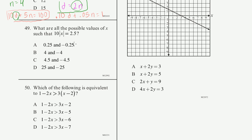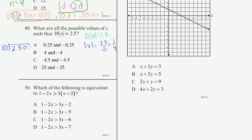Problem 49: What are all the possible values of x such that 10 times the absolute value of x equals 2.5? We can simplify: 10|x| = 2.5. Dividing both sides by 10, we get |x| = 2.5 ÷ 10. You might recognize that 2.5 times 4 equals 10, so this is 1/4. Or we can do the long division.